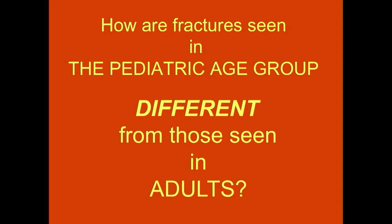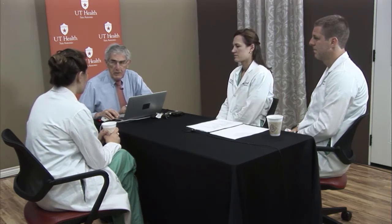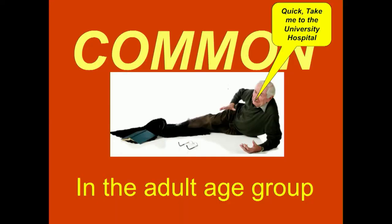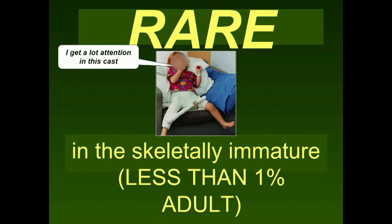How are fractures different in the pediatric age group from those of the adult? They're less common than in adults. The blood supply of the femoral head is different, so we don't see as much avascular necrosis. Fracture patterns are also different. In adults you see them once or twice a month; I've probably only seen about 30 in 40 years of practice — less than 1% compared to adults. Treatment is certainly a lot different.